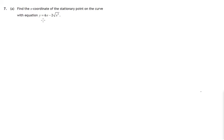Here we're given a curve with equation y equals 6x minus twice the square root of x cubed, and we're asked to find the x-coordinate of the stationary point on that curve.